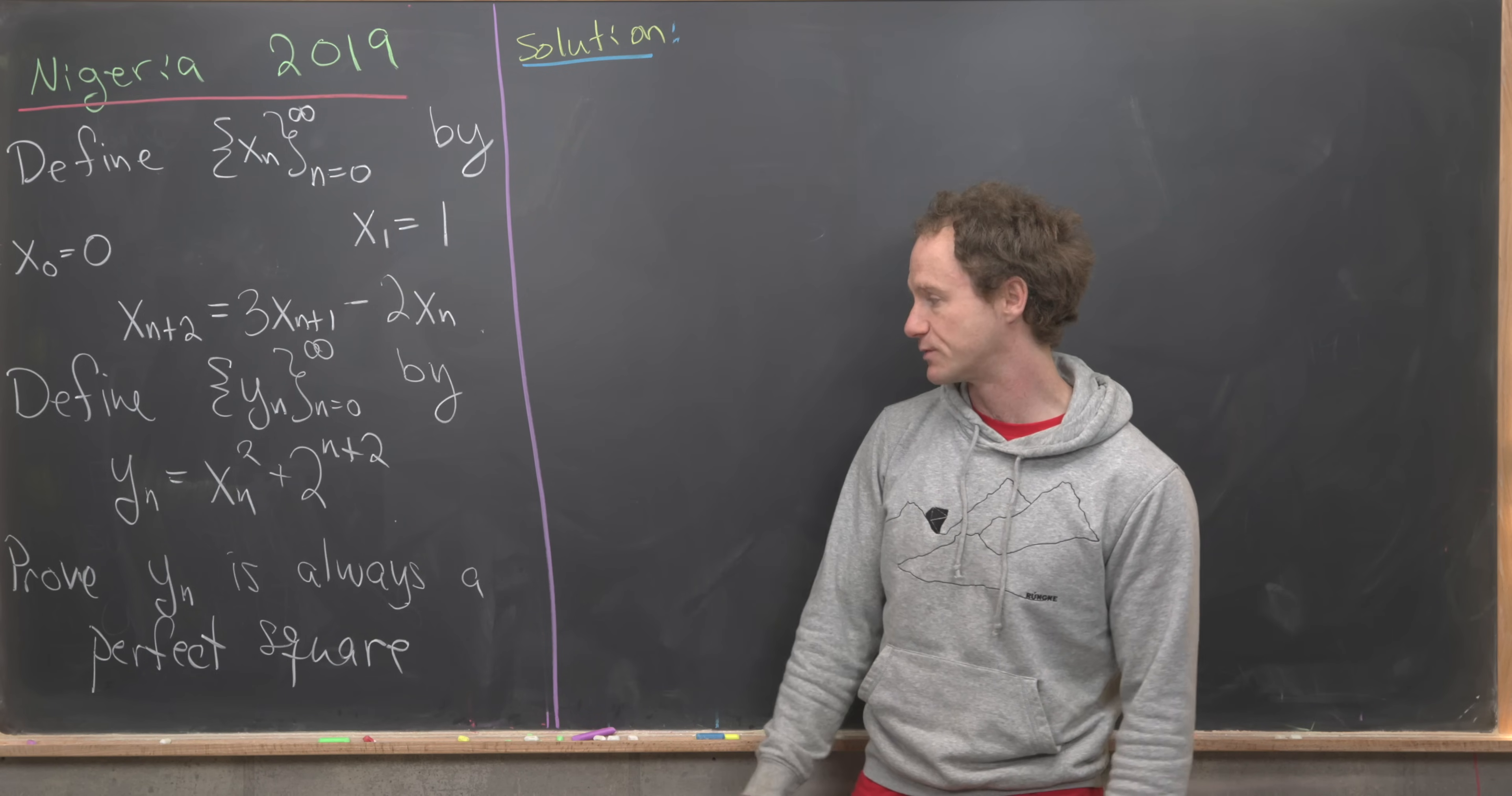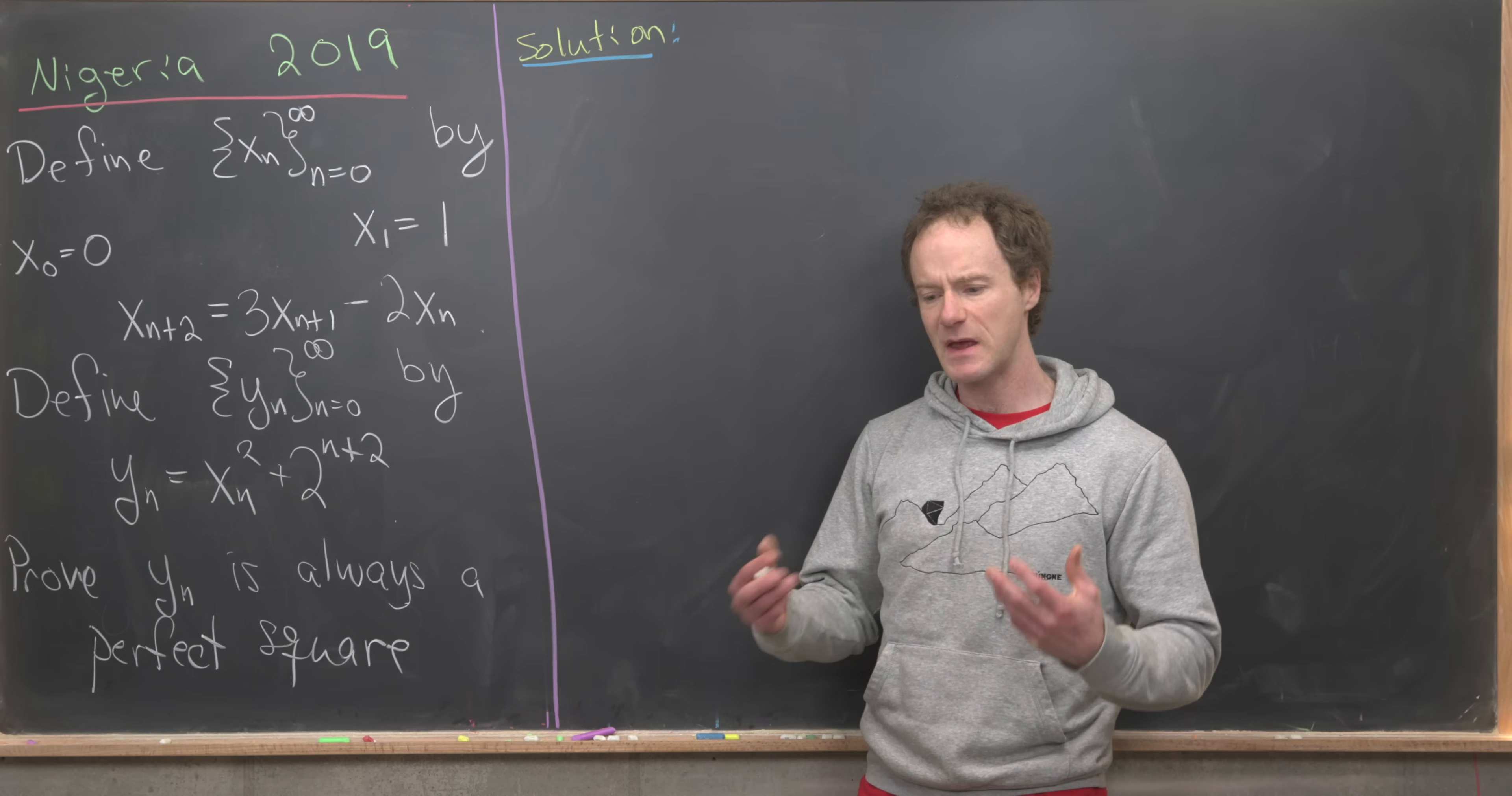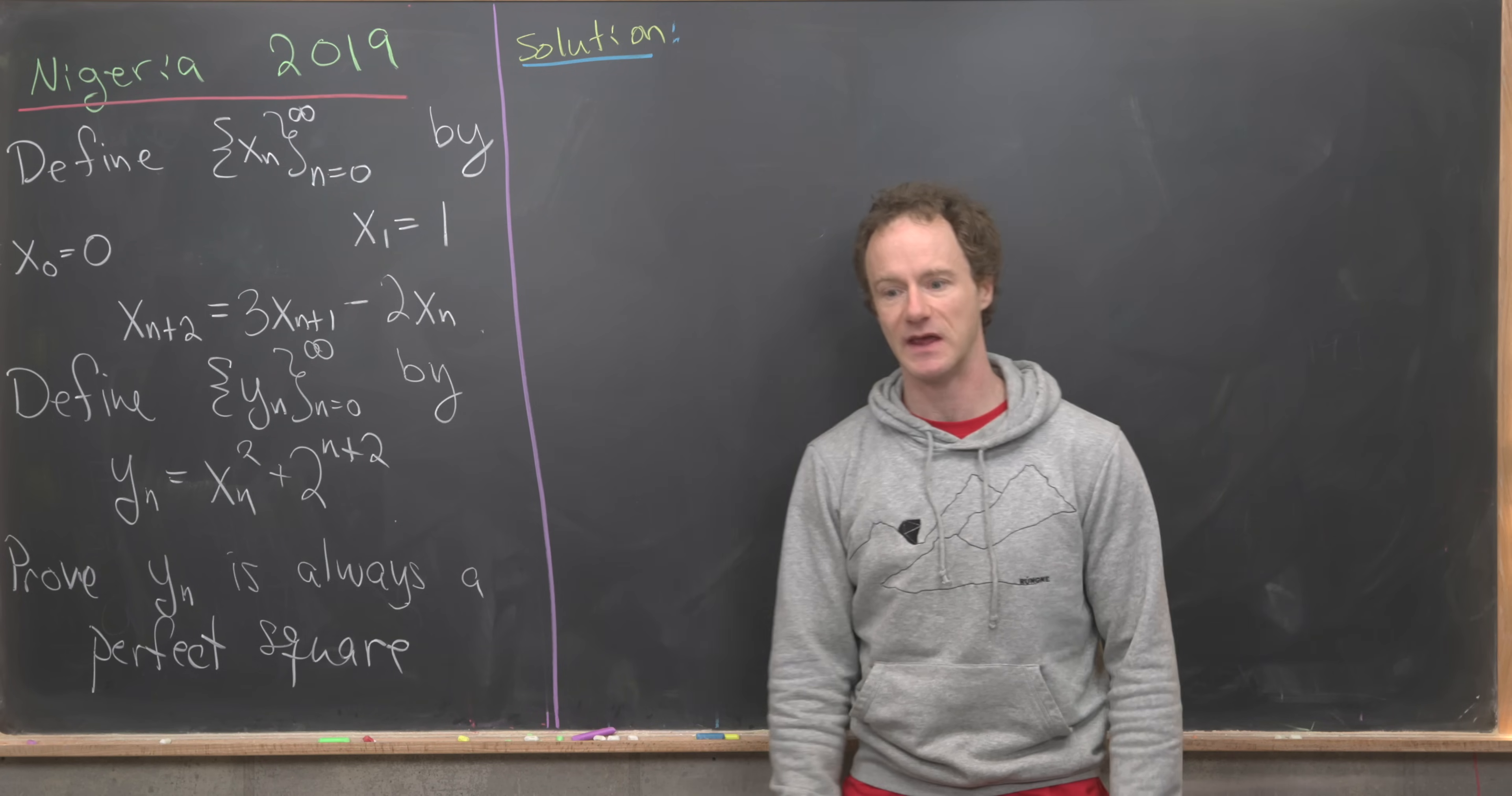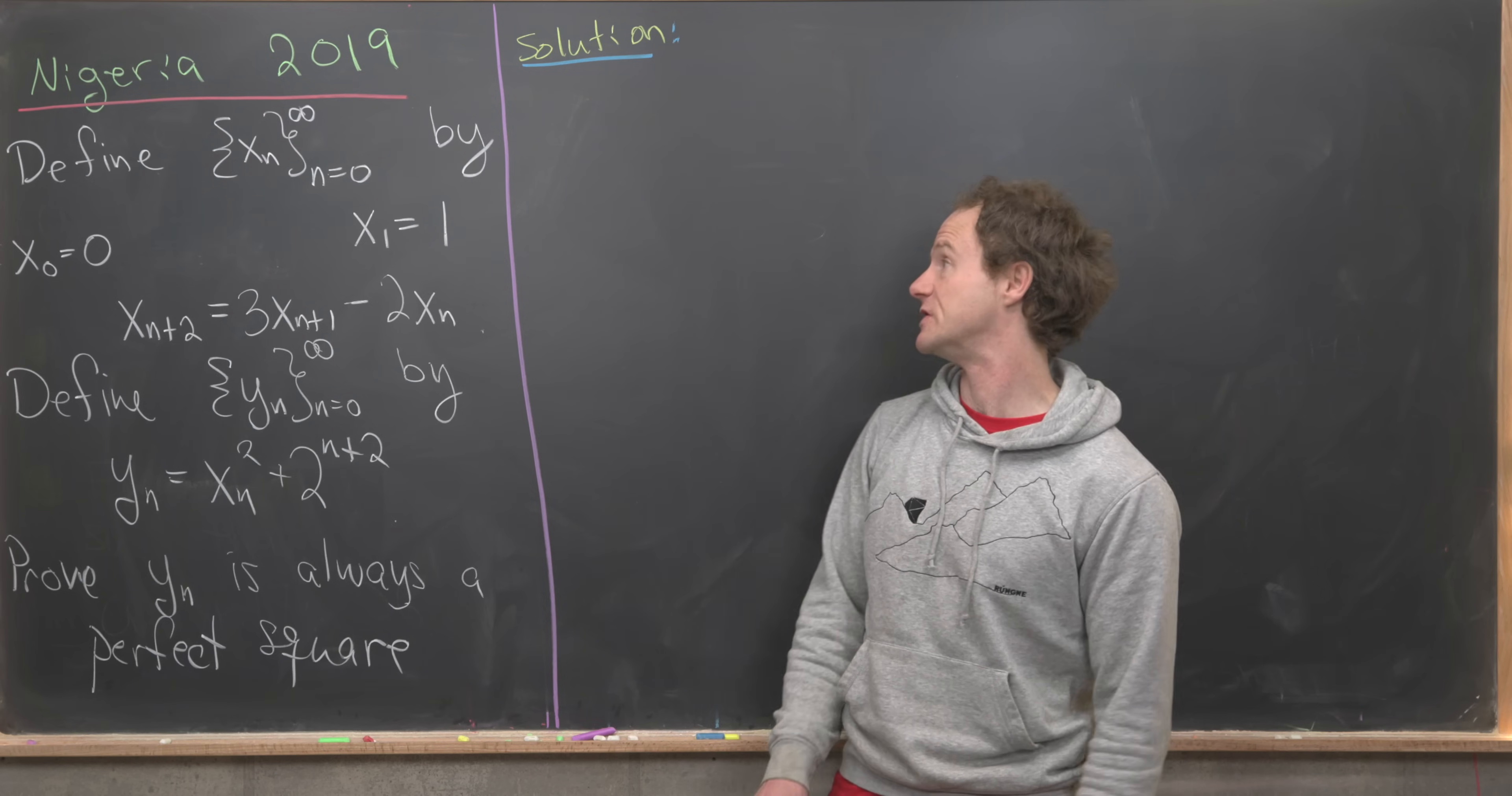Then our goal is to prove that y sub n is always a perfect square. I think maybe the quickest way to do this is to find a closed form for our sequence x sub n. I'm going to do that with generating functions, although there are a bunch of other ways that you could do it too.